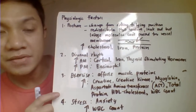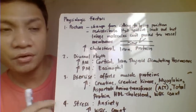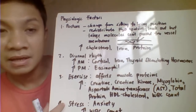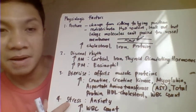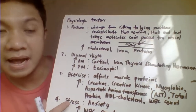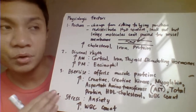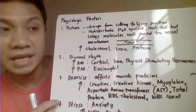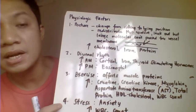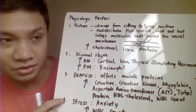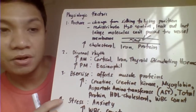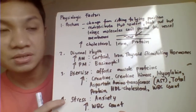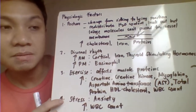The second factor is diurnal variation, or rhythmic variations. There are some analytes in our body where they are highest at a specific time of day. For example, during the morning, the following will be present at very high concentration: cortisol, iron, and TSH — thyroid-stimulating hormone.